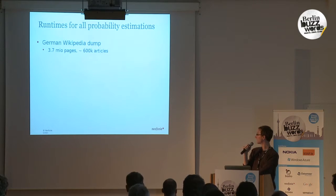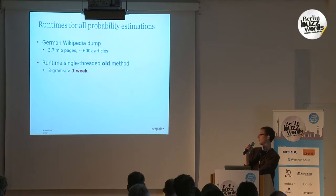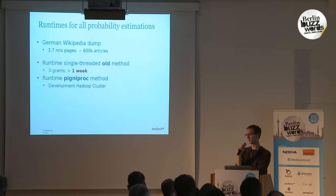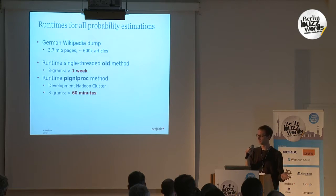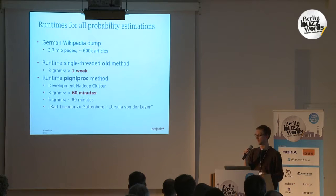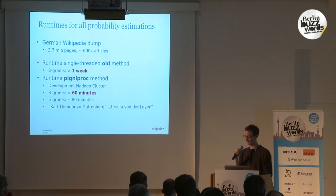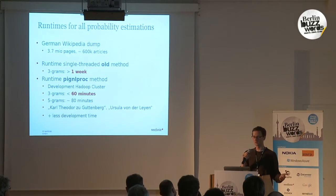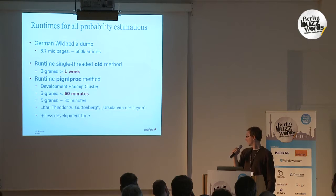What were the runtimes? We are processing the German Wikipedia, which has approximately 3.7 million pages. The previous processing time was more than a week, and we didn't even count names with more than three words. With the new method on our little development cluster, it was actually less than an hour — a significant speedup and a big improvement. We can also handle names that are longer with only a bit more processing time. Another nice fact is that it also took much less time to develop this version — Pig scripts are easier and more straightforward to write.